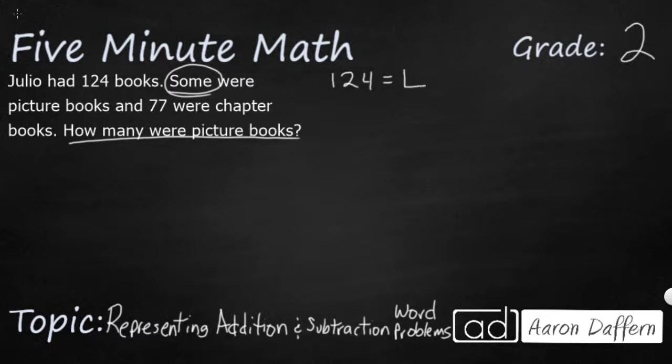This box means it's blank. We don't know. So that's going to be my picture books. If I add that to my 77, that's going to give me my total of 124. So this is an unknown quantity. Let's just put a question mark there. We're not really quite sure how many picture books there are.